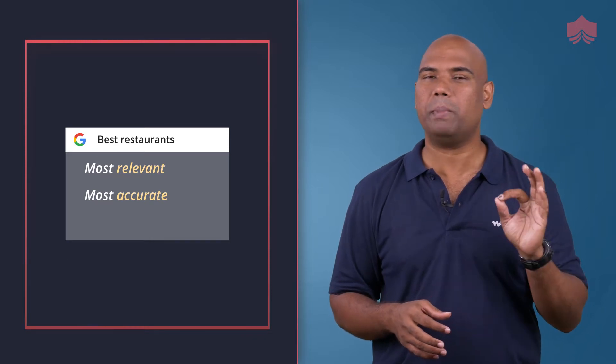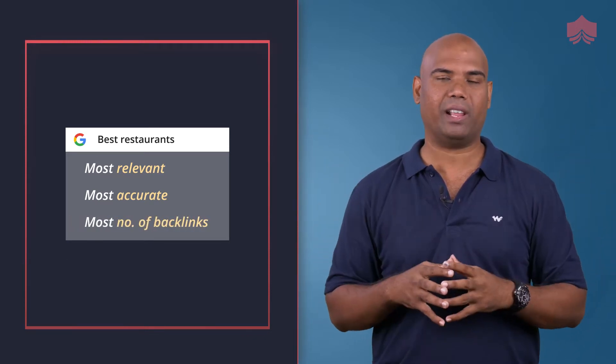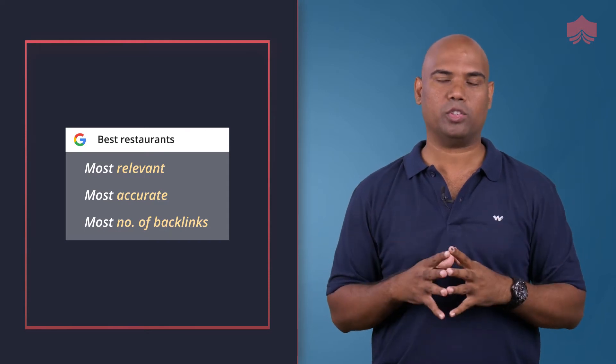So when somebody actually searches on Google, it shows the most relevant, most accurate content — the one that has the most backlinks and so on. There are literally 200 different factors that Google considers in order to rank a piece of content on its search engine results page — also called Google SERP, S-E-R-P.